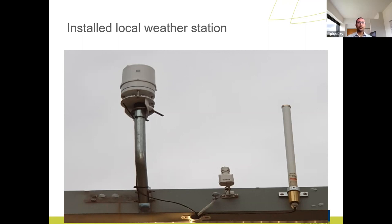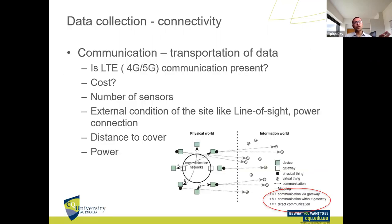The local weather station is very crucial. It can also counter thunderstorm danger, which is an important feature. It provides wind direction, wind speed, and other parameters. Using this data, we can calculate evapotranspiration — a key element for understanding water requirements for plants and farmlands.